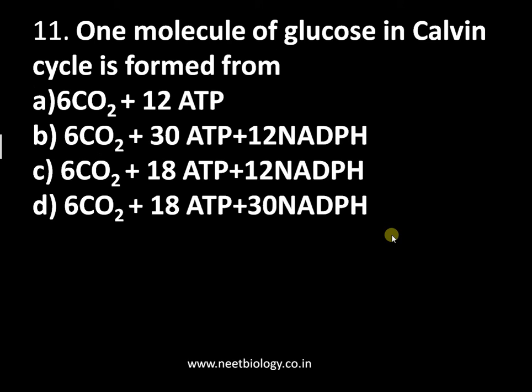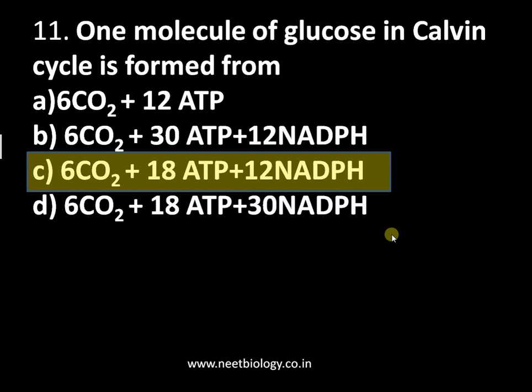Question number eleven: one molecule of glucose in the Calvin cycle is formed from — option A: 6CO2 + 12ATP, option B: 6CO2 + 30ATP + 12NADPH, option C: 6CO2 + 18ATP + 12NADPH, option D: 6CO2 + 18ATP + 30NADPH. The answer is 6CO2, 18ATP, and 12NADPH. For more detail on each step, refer to our video on Calvin cycle summary.